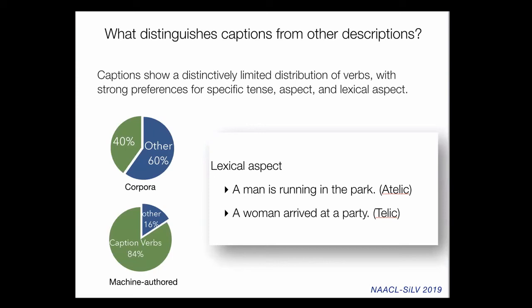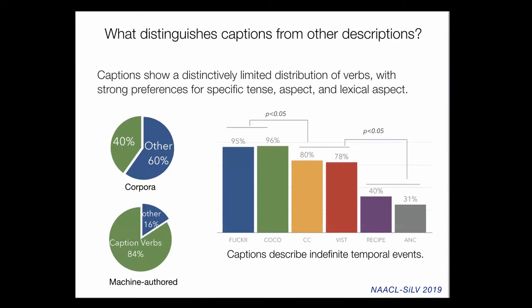Regarding lexical aspect: events can be atelic or telic. An atelic event is 'a man is running in the park' — no particular endpoint — whereas a telic verb explicitly describes an endpoint, like 'a woman arrived at the party.' Analysis shows that in Flickr and COCO, more than 95% of captions use atelic verbs or indefinite temporal events. In the American National Corpus (text only), only 31% of events are atelic. This pattern holds across multimodal corpora, though for example the multimodal Recipe QA dataset is only 40% atelic.